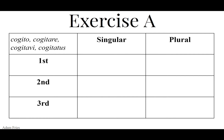For the pluperfect tense of cogitavi, you want the perfect stem, which is the third principal part with the I chopped off: cogitav. Write cogitav in all the blanks for the pluperfect tense. Then add the tense ERA and the personal endings, or simply write: eram, eras, erat, eramus, eratis, erant. So we get cogitaveram, cogitaveras, cogitaverat, cogitaveramus, cogitaveratis, cogitaverant.